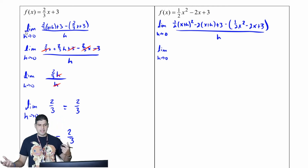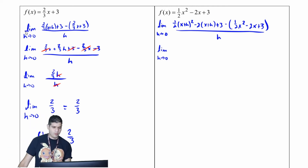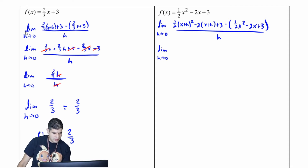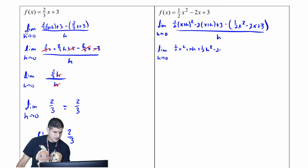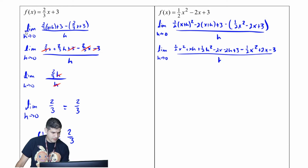Now the limit as h approaches zero — I'm going to expand x plus h squared and distribute the one-half — so I'll have one-half x squared plus xh plus one-half h squared minus two x minus two h plus three, all over h.